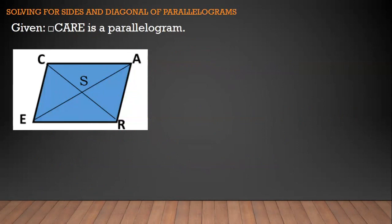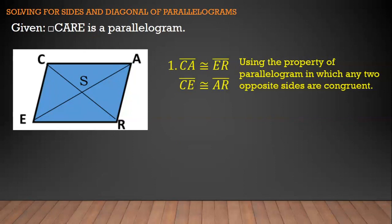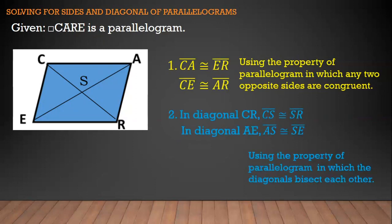So first, we have a given parallelogram here. We will first mention the properties that we will use in solving for the sides and diagonals of our parallelogram. The first property is that any two opposite sides are congruent. So we have segment CA is congruent to segment ER, and segment CE is congruent to segment AR. When we say congruent, they are equal to each other. The second property we will use in solving for sides and diagonals is the property of a parallelogram in which the diagonals bisect each other.